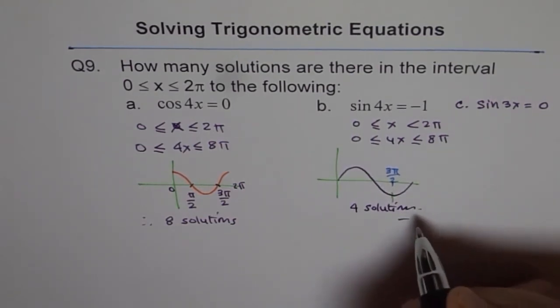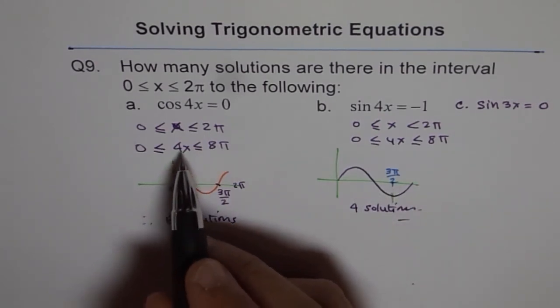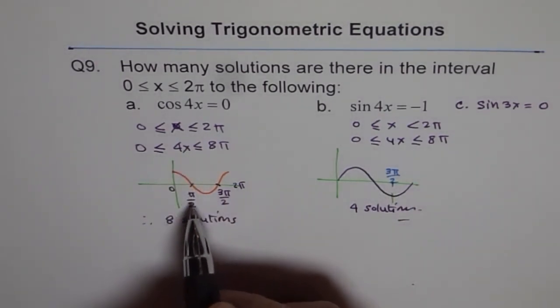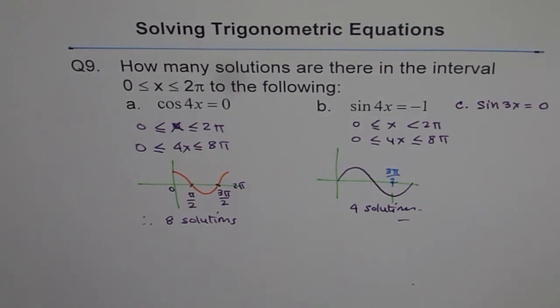So these are the 4 solutions. You'll find all those solutions and then write down, 4x equals to π by 2 and the first solution will be π by 8 for x. Do you understand? That is how you have to do it.